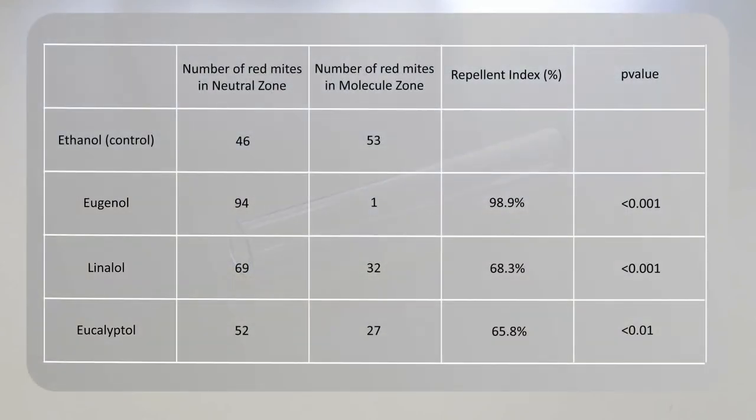The following chart shows that the three compounds have a repellent effect on red mites. We observe that eugenol was the most repellent compound against poultry red mites.